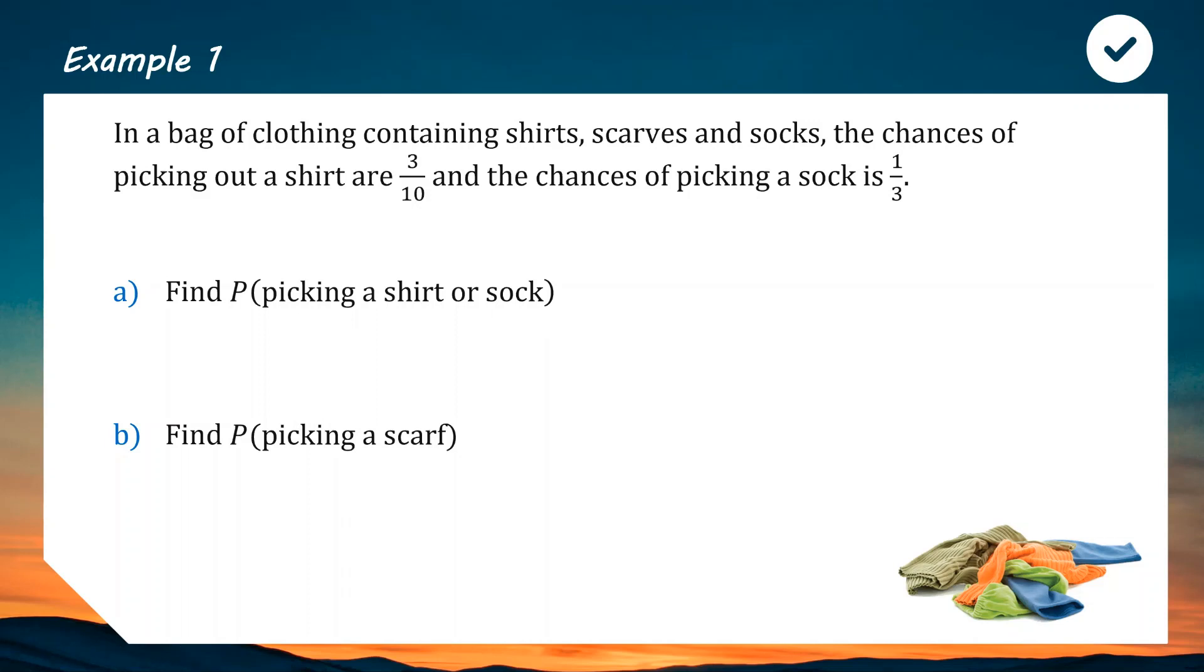If you told me there was a 1 in 6 chance of rolling a 2, and there's a 1 in 6 chance of rolling a 5, what are the chances you roll a 2 or a 5? That's 2 out of 6. It's the 1/6 plus the 1/6. Sometimes in probability, when you want to find the probability of this or this, quite often you can just do this plus this. If we want to find the probability of getting a shirt or a sock, we can just do the probability of the shirt plus with the probability of the sock. We can do 3/10 plus 1/3. On our calculator, it'll tell us it is 19 out of 30.